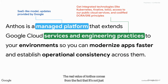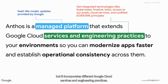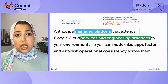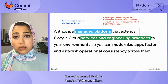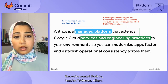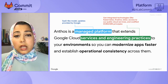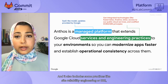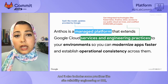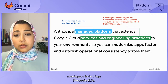The real value of Anthos comes from the fact that it's not just Kubernetes. Yes, Kubernetes is at its core, but it incorporates different Google Cloud services and engineering practices. It's made up of open source software that we've created like Istio, Knative, Tekton, and others. It also includes some practices like site reliability engineering, or SRE, allowing you to do things like create SLOs.